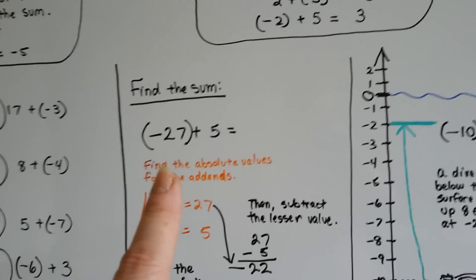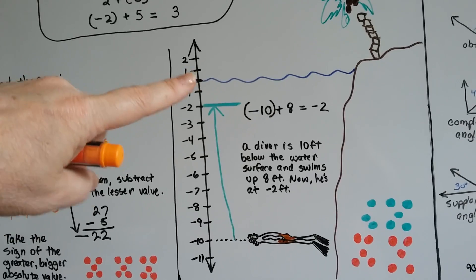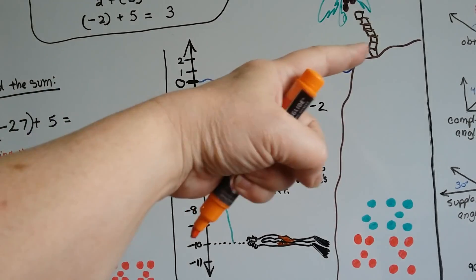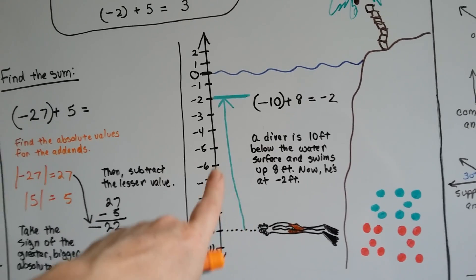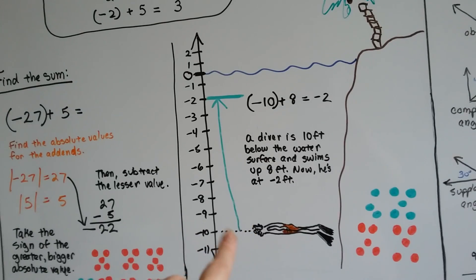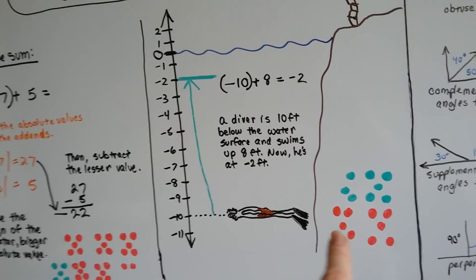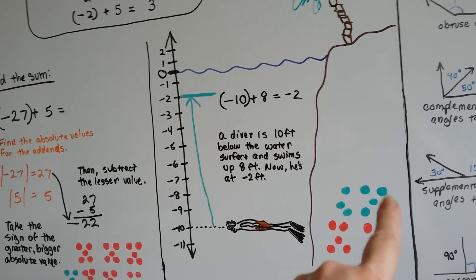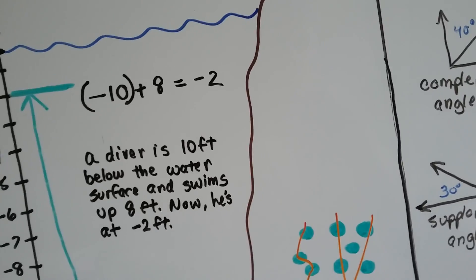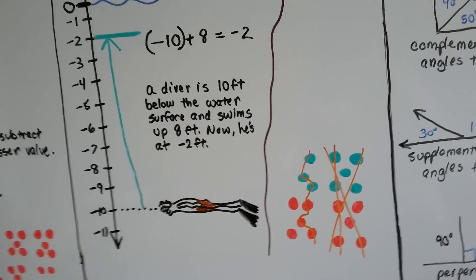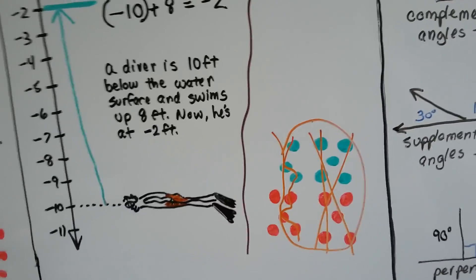Now we're going to find the sum when we have different signs. The diver is now 10 feet below the water level — the water level is at 0 — and he's going to swim up 8 feet: negative 10 plus 8. He goes up 8 feet in the water, but he's still at negative 2. We had 10 negative chips; we added 8 positive chips, and they canceled out, leaving only the two negative chips.